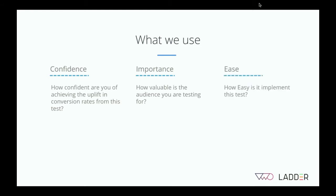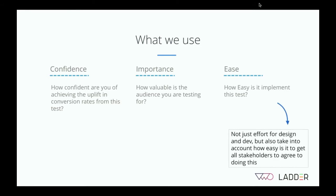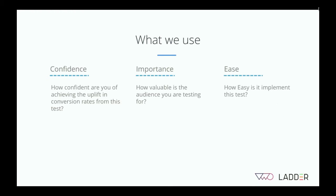The last metric is ease — how easy is it to implement this test. When thinking about ease, don't just consider design or dev effort, but also how easy it is to get stakeholders to agree. For example, changes to the checkout cart will involve many stakeholders and slower decision making than some lower hanging fruits. So it's really important to look at your ideas and ensure you're testing the right ones to get maximum out of your testing program. That covers research techniques, how to hypothesize, and how to prioritize.